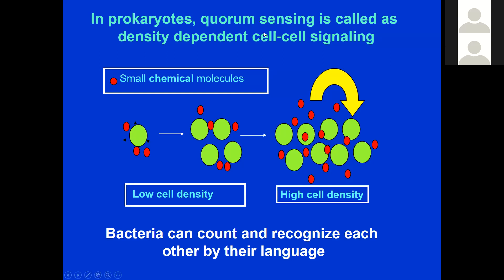Bacteria communicate by a process called quorum sensing — a density-dependent cell-to-cell signaling. When bacteria are low in number at low cell density, they keep producing chemical signaling molecules. As density increases, the amount of signaling molecule also increases. When it reaches a particular threshold, it sends a message back to the bacteria telling them how many there are and what functions they should perform. So there is communication at low cell density and at high cell density, and basically bacteria can count and recognize each other by their language.